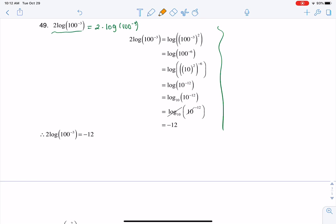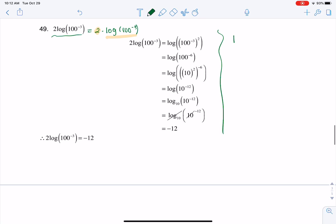So I'm going to save the 2 until later, and right now I just want to focus on the log term. So we have log of 100, let me rewrite that, of 100 to the negative 3.